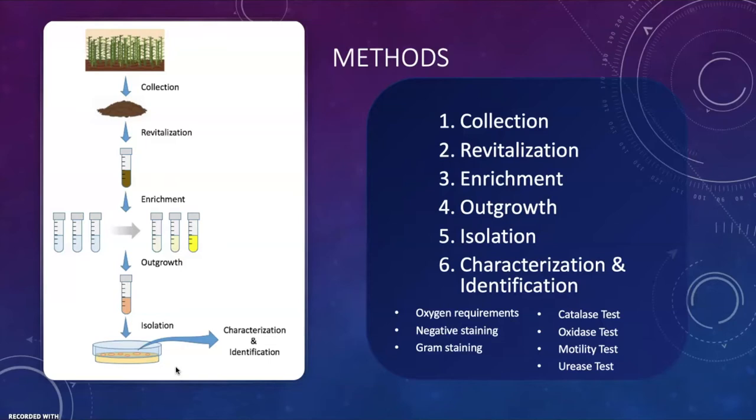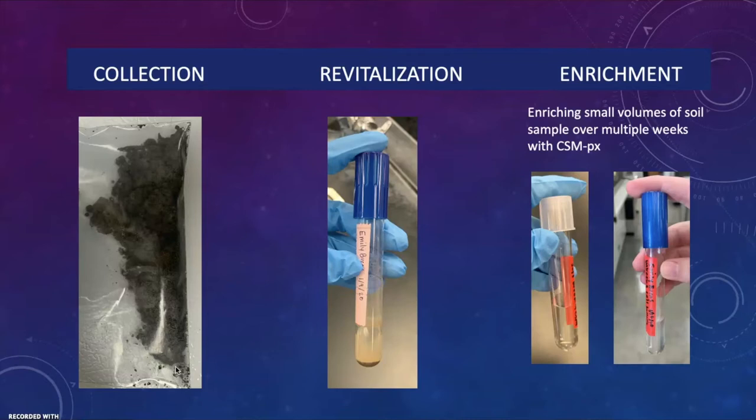For the collection, here's just the baggie of the specific soil sample itself. For revitalization, it's basically taking a small amount of the soil sample and putting it in a carbon-free selective media with peroxin, abbreviated CSMPX. For the enrichment, it's a continual change of CSMPX into new tubes with the bacterial soil.